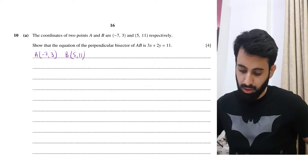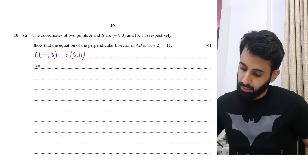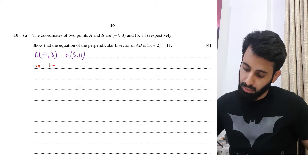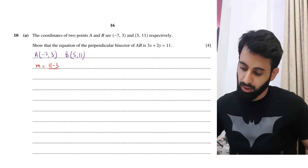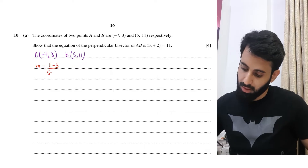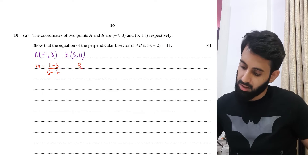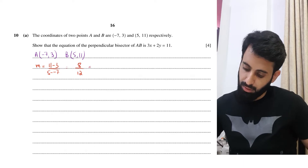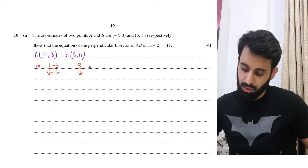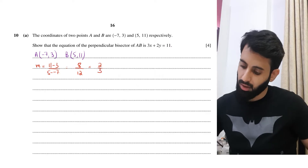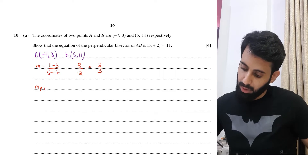The first thing we need is the gradient. The gradient of AB is worked out using the gradient formula: (11 - 3) / (5 - (-7)) = 8 / 12 = 2/3. The gradient of the perpendicular bisector is the negative reciprocal, which is -3/2.